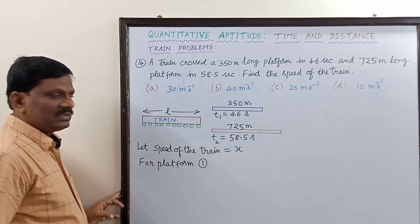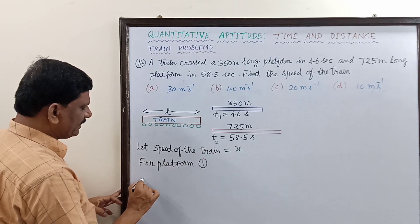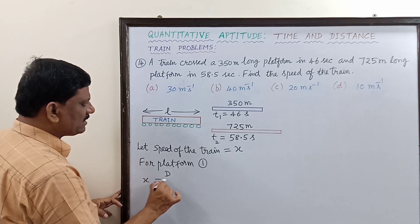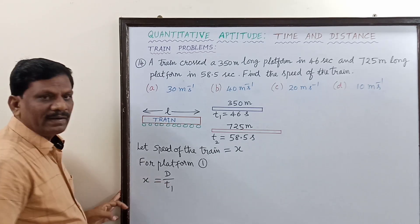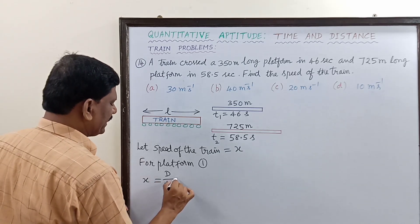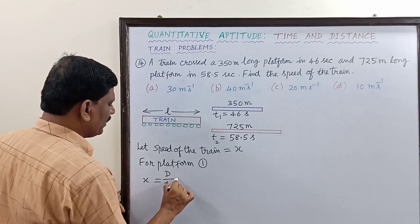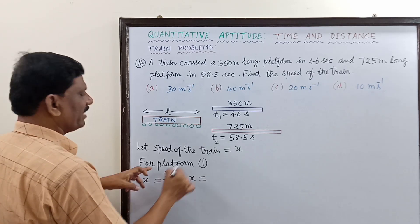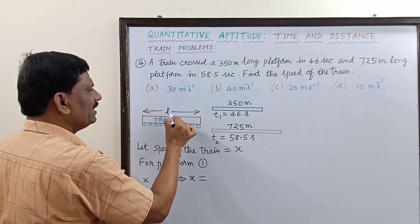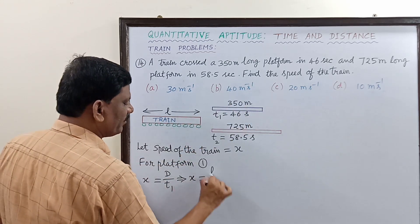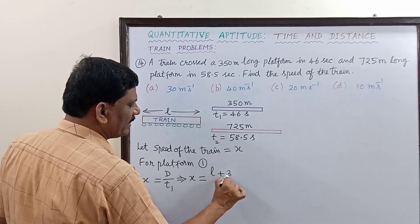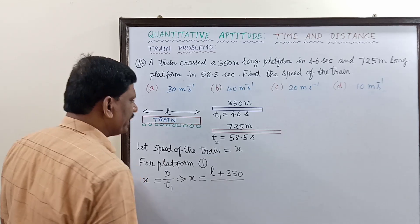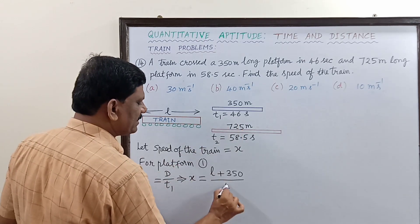For platform one, the speed of the train X must equal the distance traveled divided by the time taken. So X equals L plus 350, divided by 46 seconds. This is our first equation.